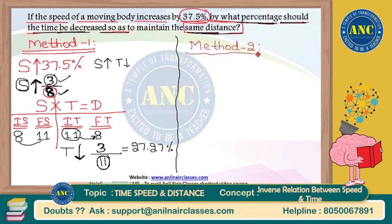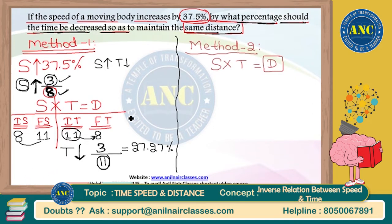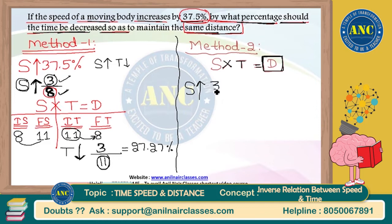Method 2: speed × time = distance. The distance is constant, given in the question as the same distance. If the right-hand side is constant and the product of two parameters gives a constant quantity, use this method. Speed increases by 37.5 percent, which is 3 by 8. If speed is increasing, time will decrease.